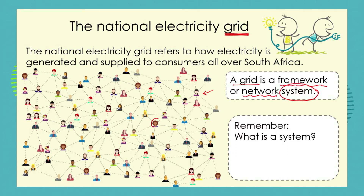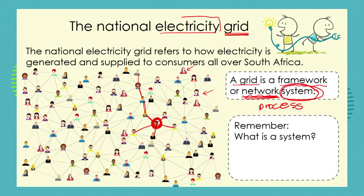Let's pick a person in this social media network. This person is in direct contact with that person, that person, that person, this man, and that person. But this person is also indirectly in contact with others further away. These little lines show us a network — it's a system because everybody is able to communicate with each other. When we talk about an electricity grid, substitute each of these people for a different part of the process that makes and distributes electricity.